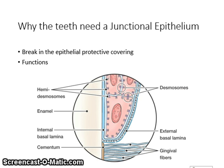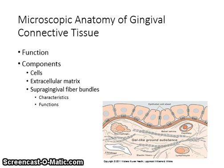The presence of teeth creates a break in the epithelial protective covering. The junctional epithelium provides an attachment between the gingiva and the tooth surface, providing a seal at the base of the gingival sulcus or periodontal pocket. Epithelial cells of the junctional epithelium attach to the underlying gingival connective tissue via hemidesmosomes and the external basal lamina. In health, the junctional epithelium has a smooth tissue interface with the connective tissue — no wavy junctions.